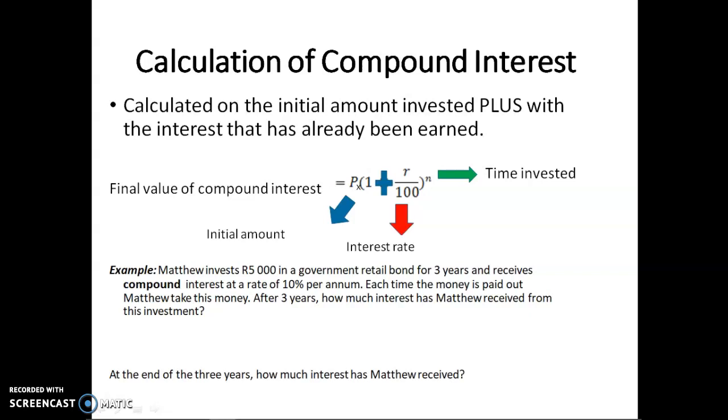And a little n as an exponent for the time that it was invested, the number of years. Again, we have Matthew invests 5,000 rand in a government retail bond for three years and receives compound interest at a rate of 10%. Each time the money is paid out, Matthew takes this money.